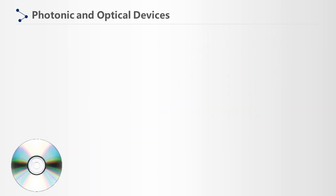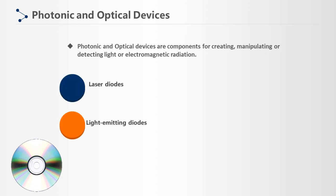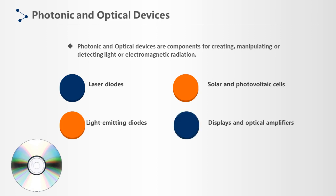Photonic and optical devices are components for creating, manipulating, or detecting light or electromagnetic radiation. These can include laser diodes, light-emitting diodes, solar and photovoltaic cells, displays, and optical amplifiers. Other examples include devices for modulating a beam of light and for combining and separating beams of light of different wavelengths.